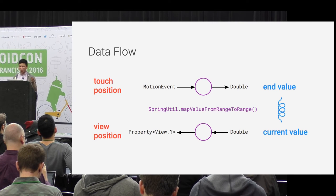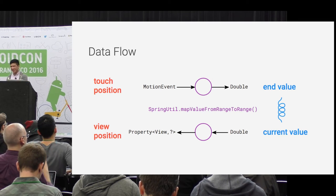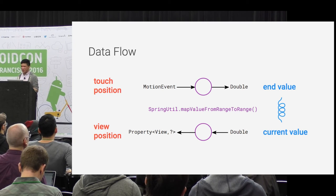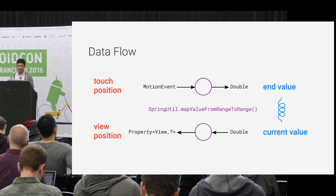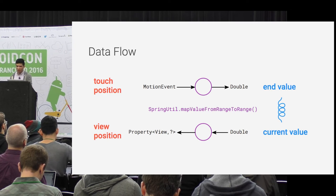There's also the question of going from a motion event to the end value of a spring - and you have to do the same thing in reverse, taking that spring value and mapping it to a view position. A motion event has X and Y in pixels, your spring value could be in pixels or DP, and your view property is probably also in pixels or DP. There's one useful utility method: mapValueFromRangeToRange, which helps you do this mapping.